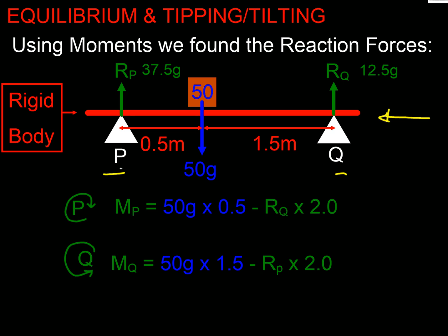We took moments about each point, and from each of those moments, on the basis that everything was in equilibrium, we calculated the reaction forces, which is 12.5G at Q and 37.5G at P.